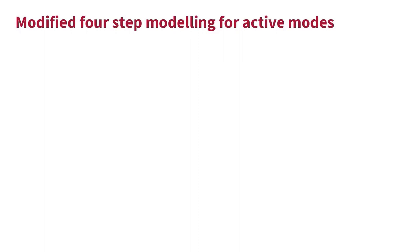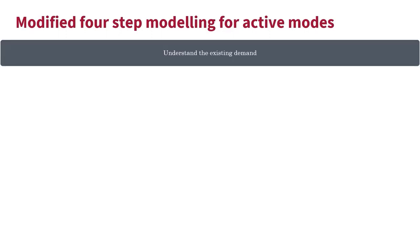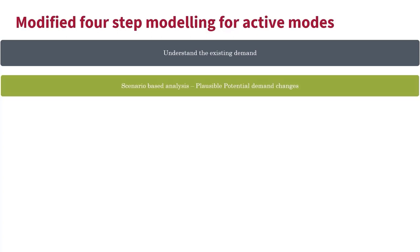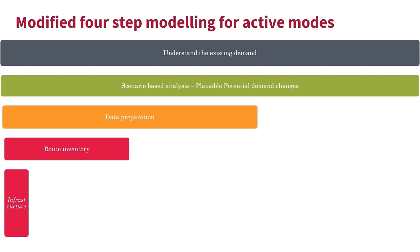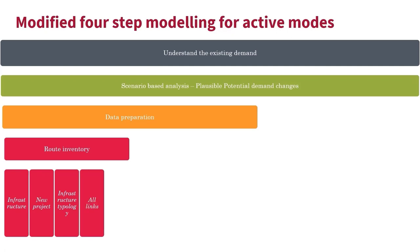In summary, we need a modified four-step modeling approach when modeling active modes. The first step helps understand existing demand for active modes and who the existing users are. Using scenario-based analysis, we can estimate potential bicycle and walking demand in future years. When estimating mode choice, route choice, and performing network assignment, we need to collect detailed data, including preparing a route inventory: mapping infrastructure, identifying new projects, defining infrastructure by typology, and ensuring all links including local and micro streets are digitized.